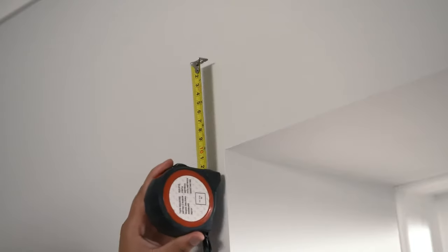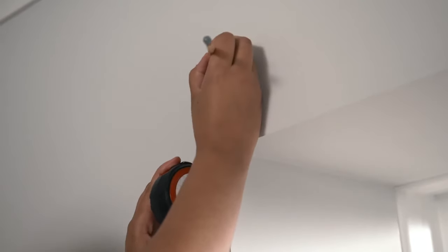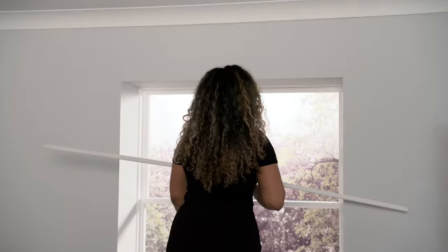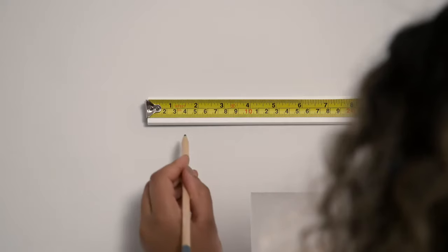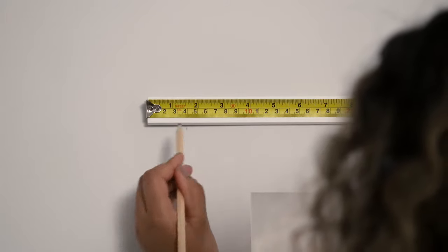So simply measure 10 centimeters above your window frame. Then centrally align the track against your window and mark the position of the end brackets. They should be four centimeters in from the end of the track.